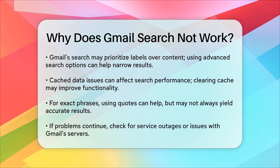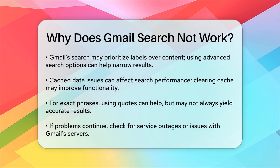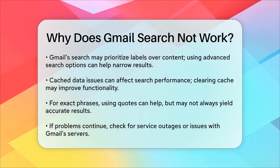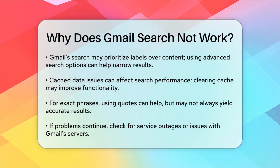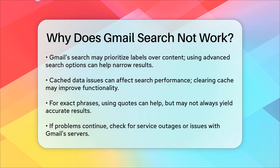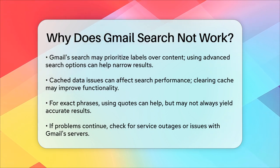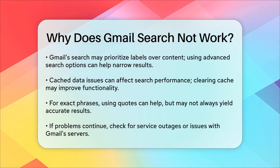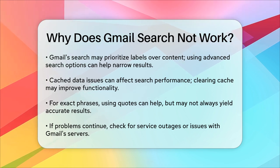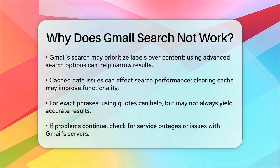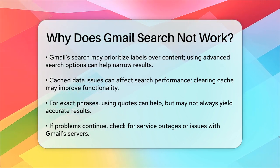If you're searching for exact phrases, Gmail's fuzzy logic can sometimes show irrelevant results. Using quotes around your search phrase can help, but even this method is not foolproof. In such cases, using the advanced search options or exporting your mailbox data for offline searching might be necessary.